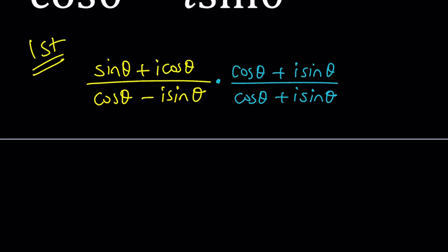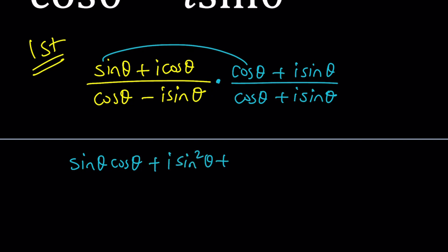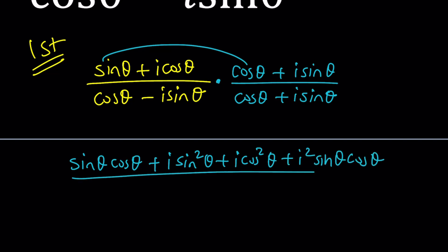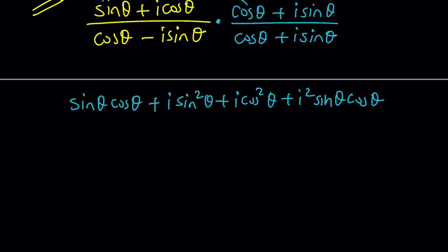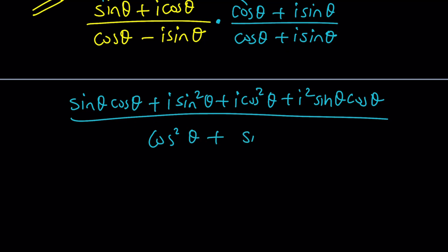In the numerator I just need to distribute — there's no shortcut. Go ahead and multiply everything: sine theta cosine theta, then plus i sine squared theta, plus i cosine squared theta, plus i squared sine theta cosine theta. All of that is divided by the product of these two things, which makes a sum of two squares: cosine squared theta plus sine squared theta. And that's equal to one, even when theta is complex. So this denominator is one, and notice that i squared is negative one.